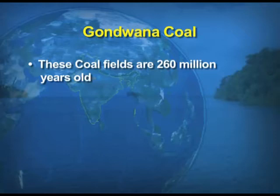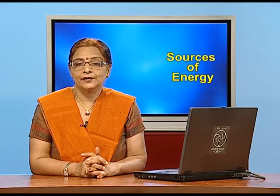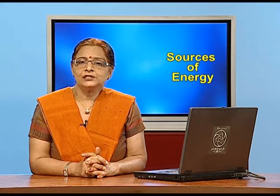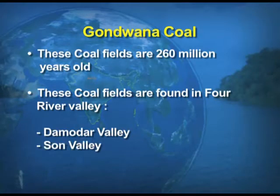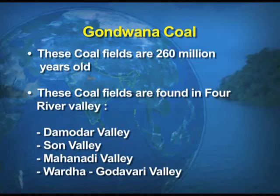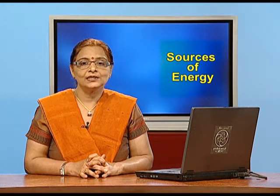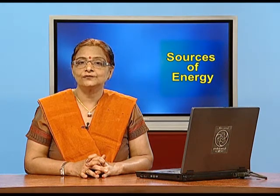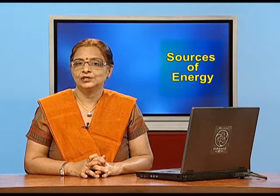These Gondwana coal fields are 260 million years old. The fields which come under this Gondwana area are the Damodar valley, Son valley, Mahanadi valley, and Wardha-Godavari valley. One most important fact: Damodar valley is known as the Ruhr of the country. Ruhr is the most important coal-producing area in Germany, and on that basis Damodar valley in India is given the name of Ruhr.